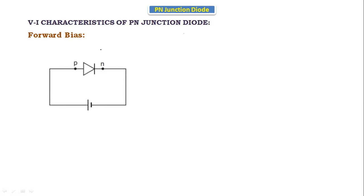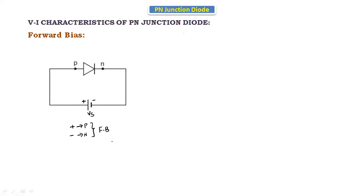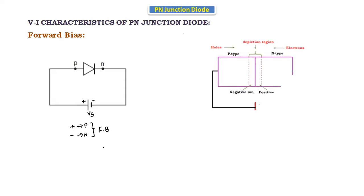In the forward bias connection, this is the PN junction diode having two terminals: P-type and N-type. The supply voltage is indicated by Vs, with a positive terminal and a negative terminal. When the positive terminal of the supply is connected to the P-type and the negative terminal is connected to the N-type, the diode is in forward bias condition.